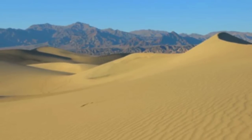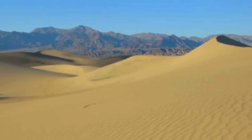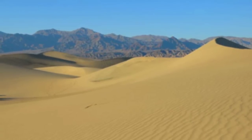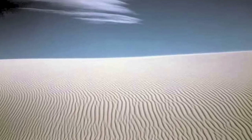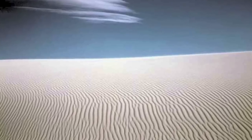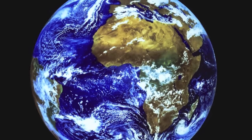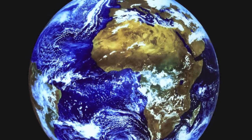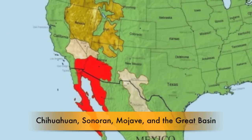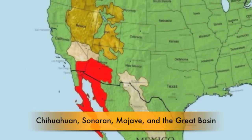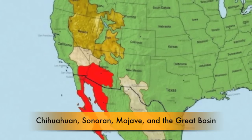Deserts usually have very little rainfall, or they get a lot of rainfall in a very short time. Then there are long periods of time, especially in the winter, when there is no rain at all. Deserts cover about 20% of the surface of the earth. North America has four major hot and dry deserts: Chihuahuan, Sonoran, Mojave, and the Great Basin.